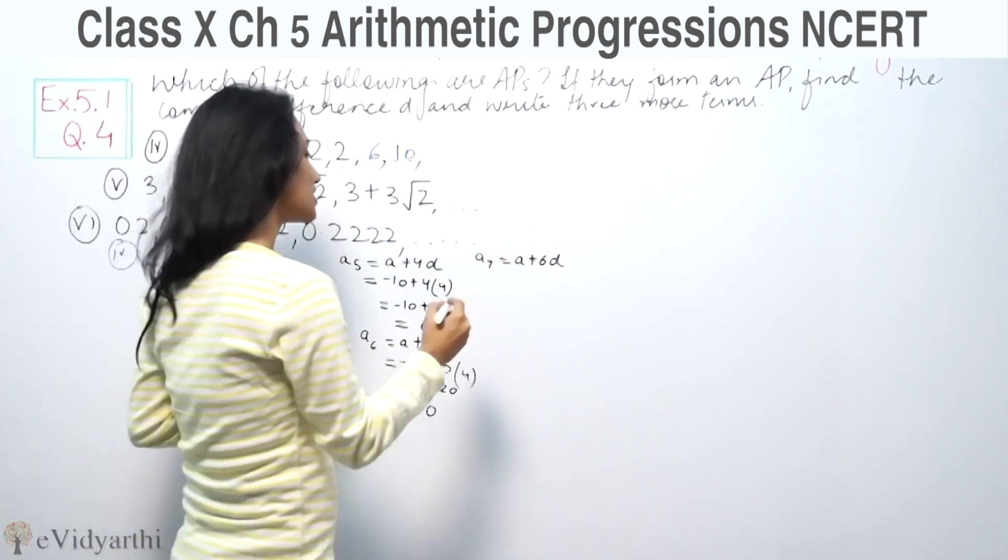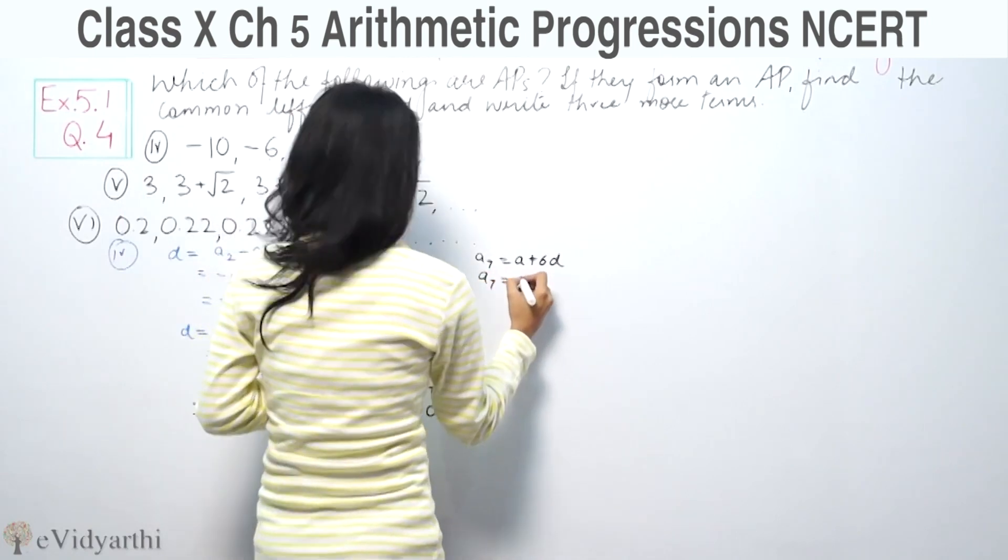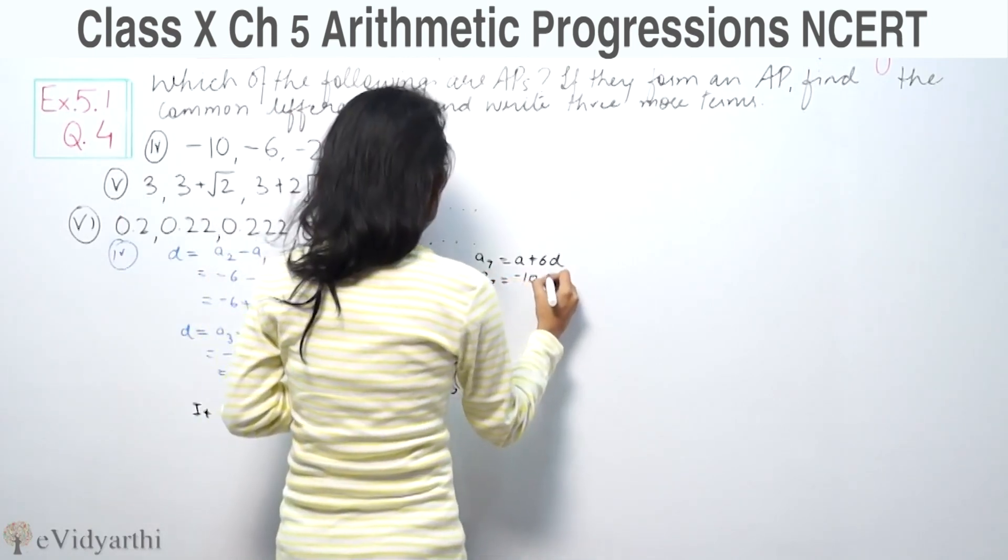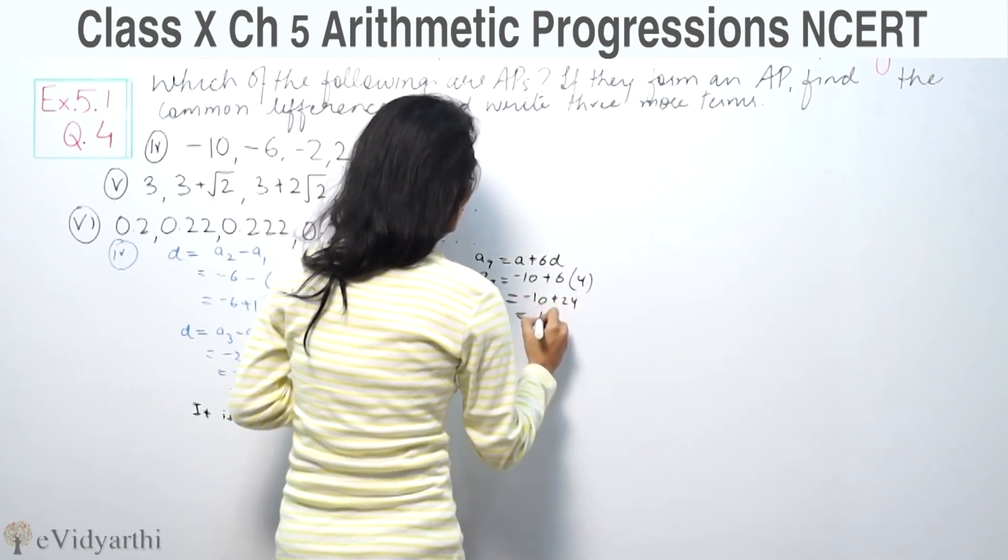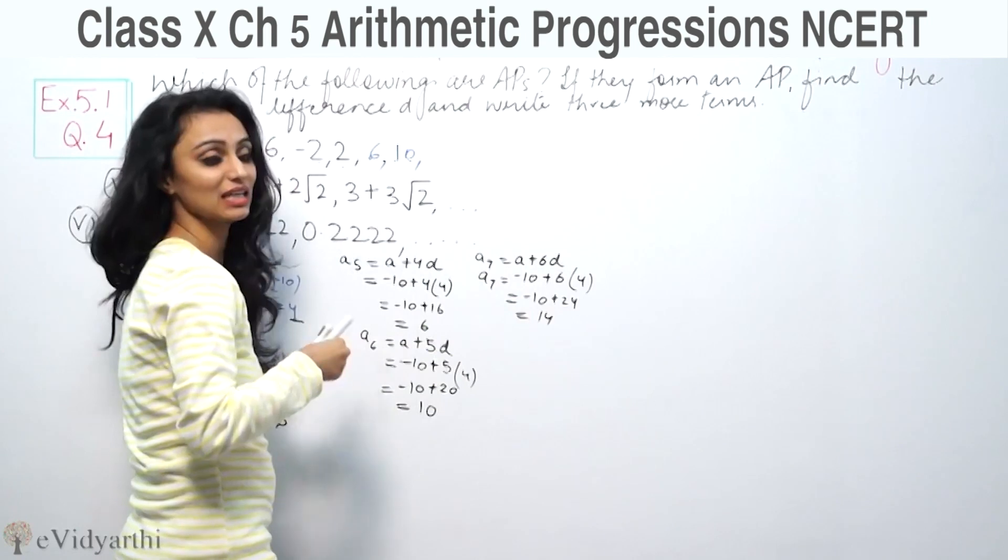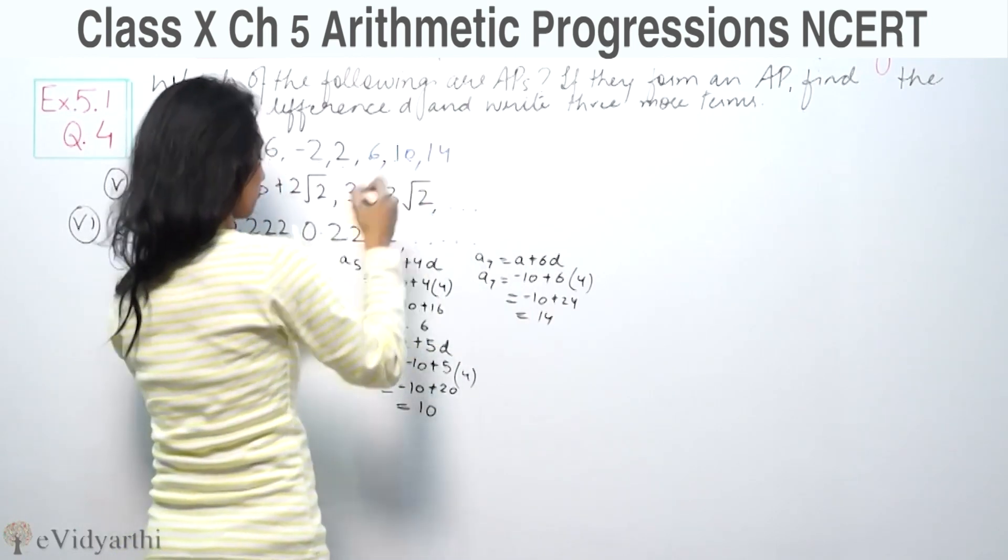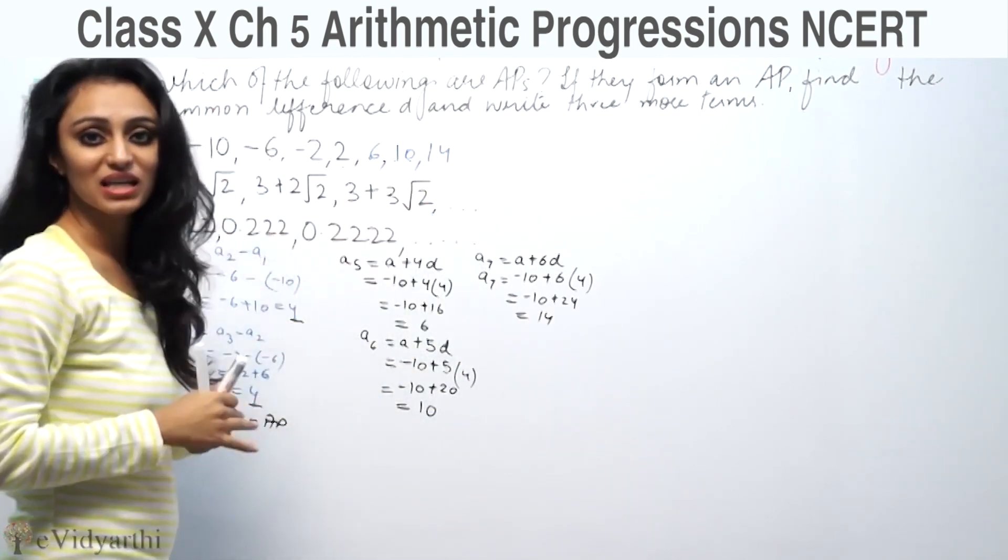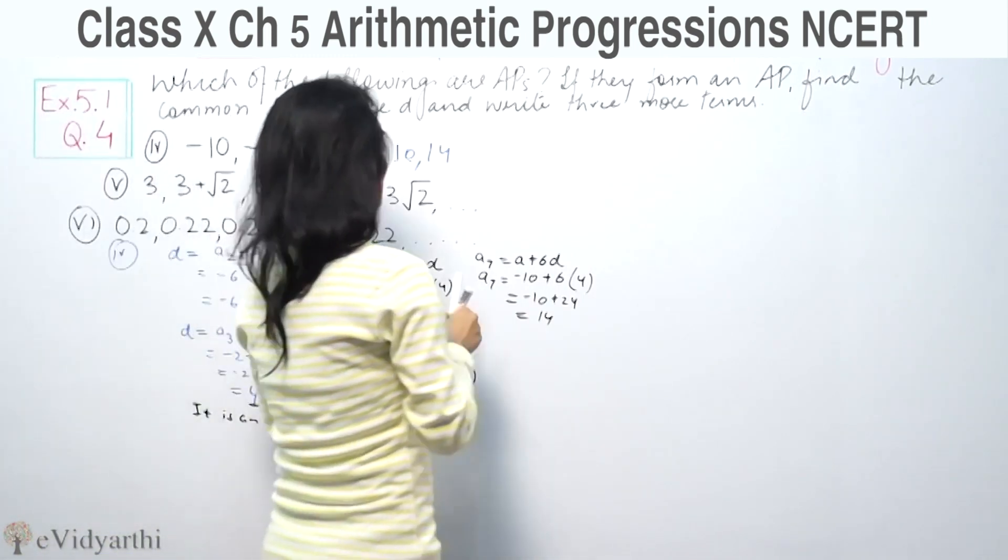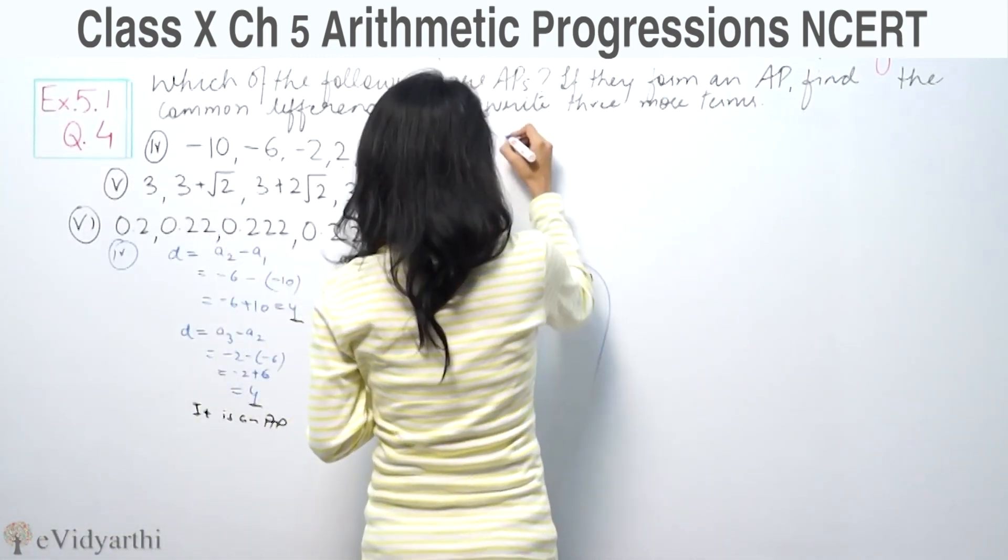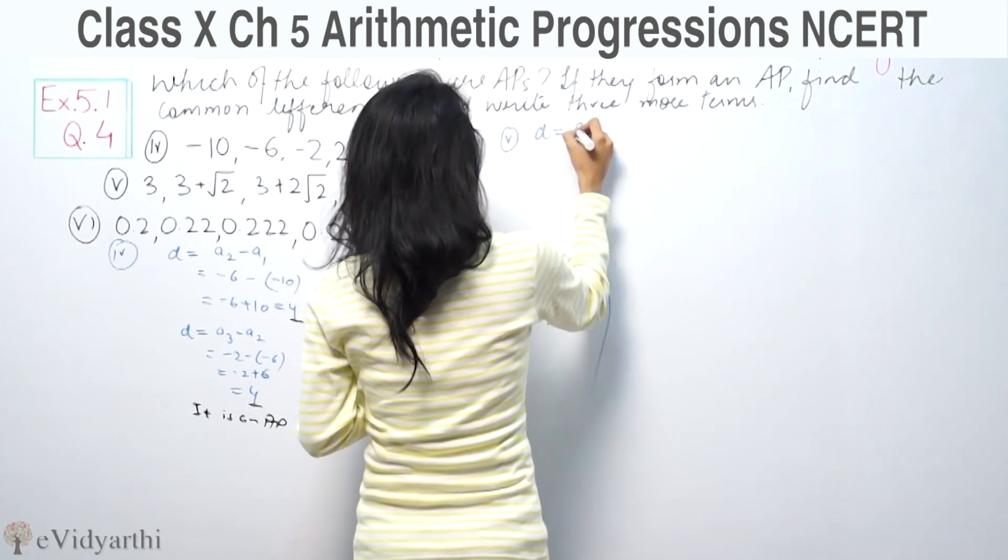For the seventh term, A7 equals A plus 6d, so -10 plus 6 times 4 equals -10 plus 24 equals 14. So the next three terms are 6, 10, and 14, with common difference 4.